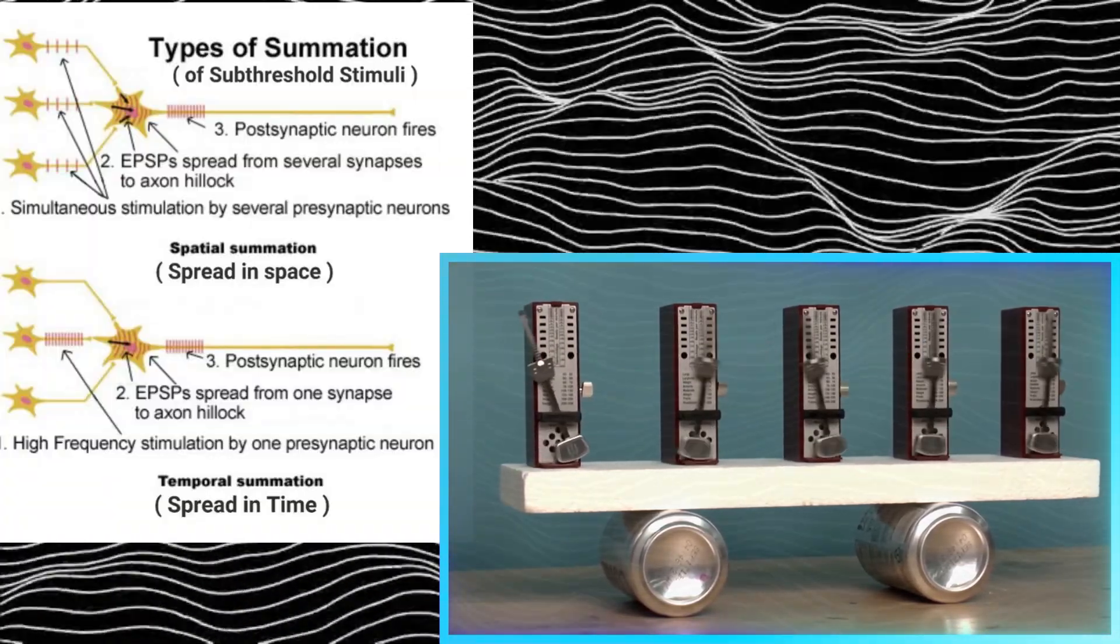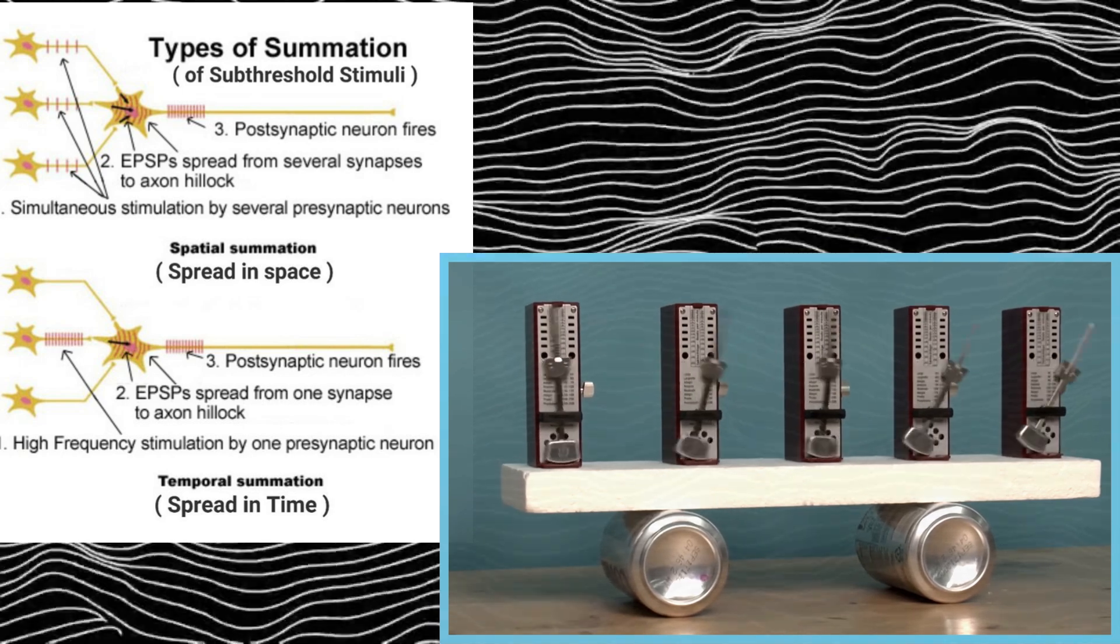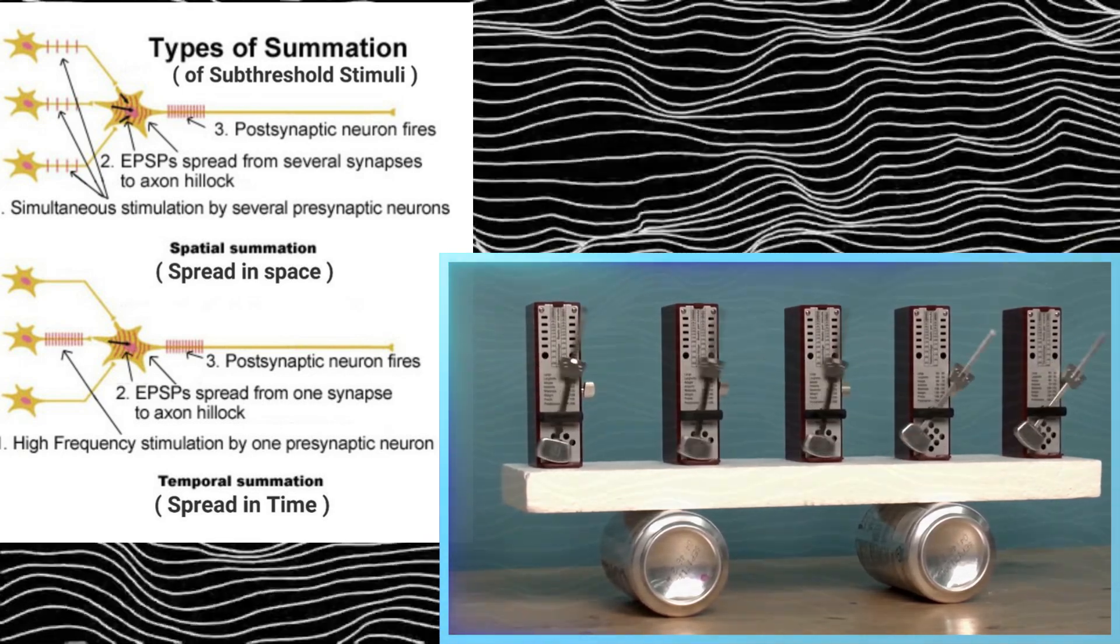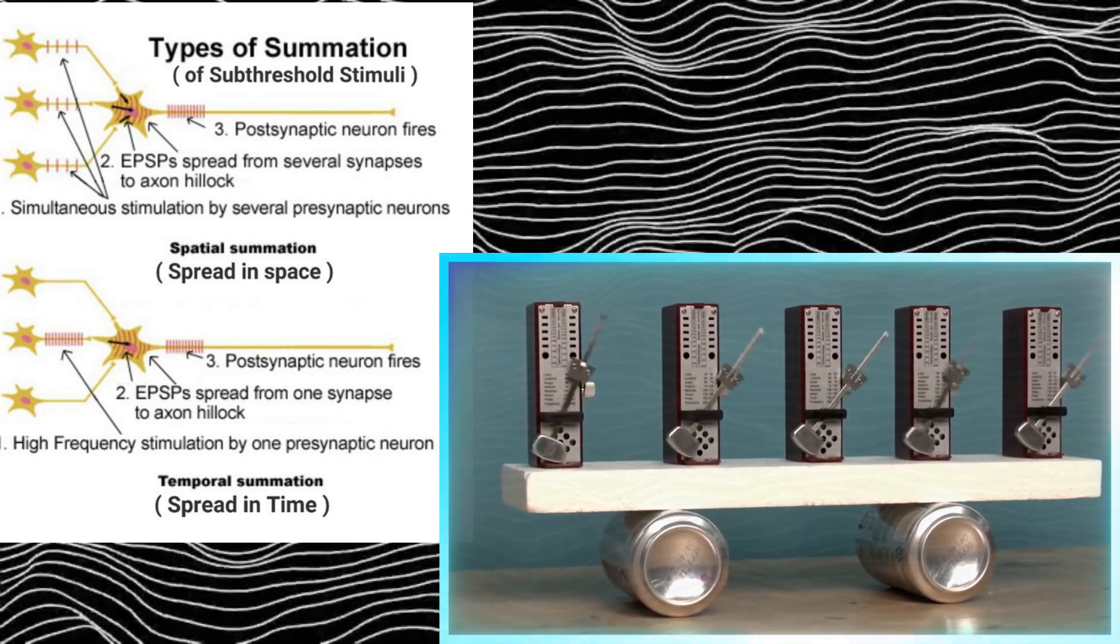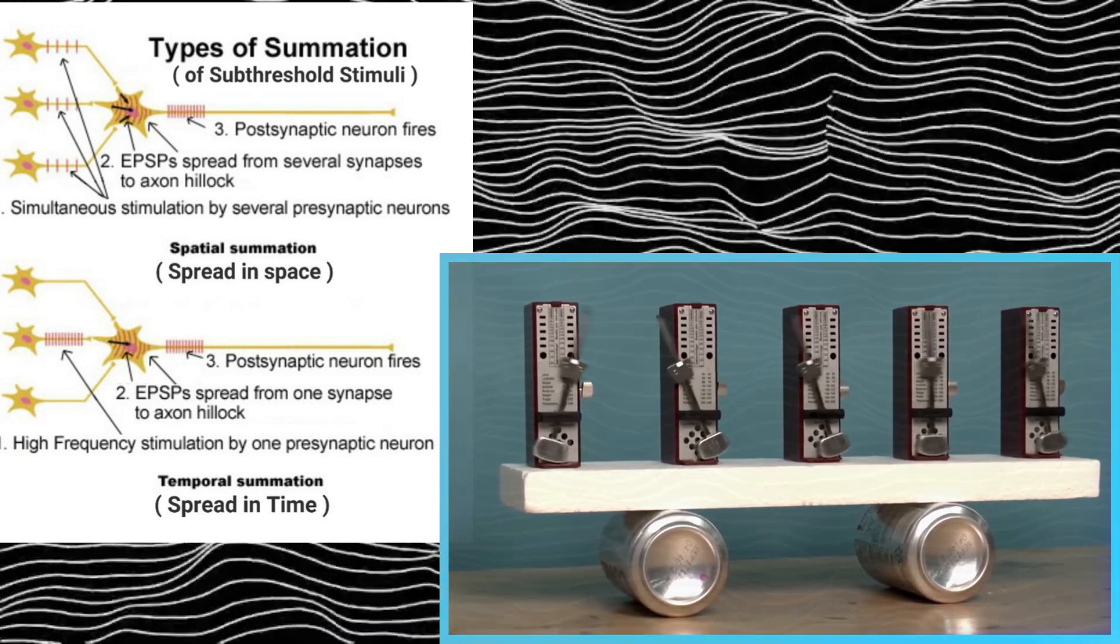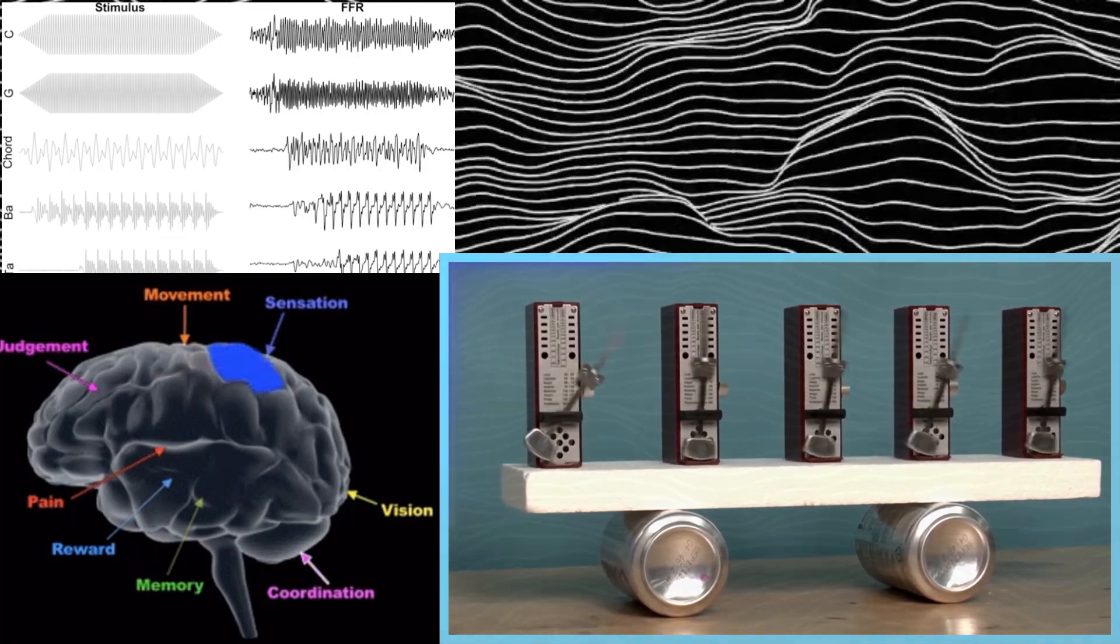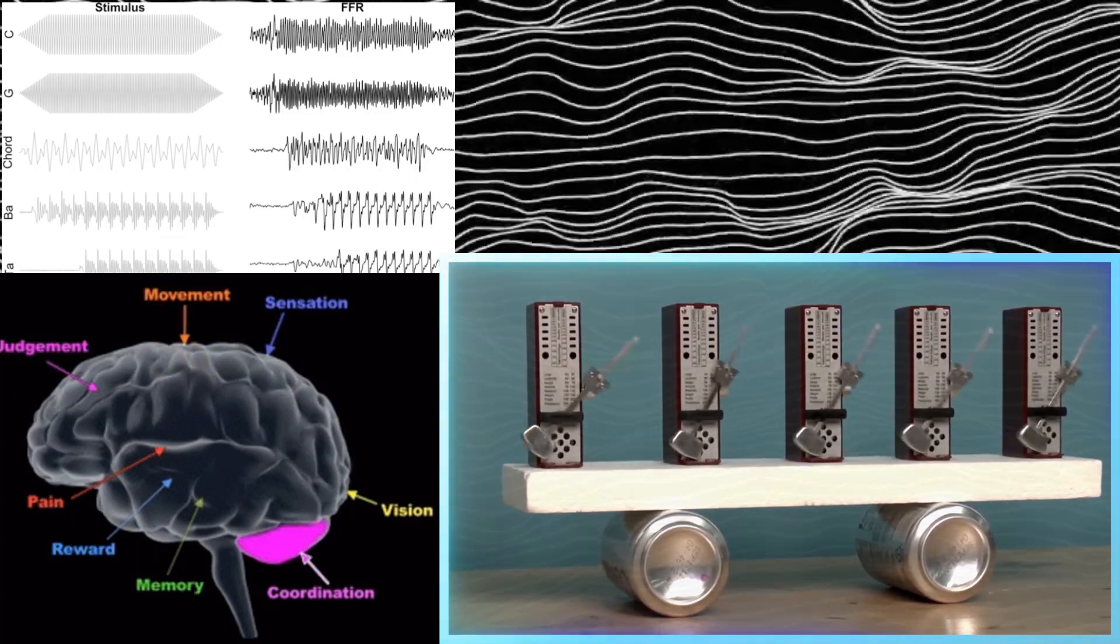The frequency follow response is a neurophysiological measure that reflects the brain's tracking of temporal structures of stimuli, known as the tempo, rhythm, or frequency. These patterns can influence brainwave states and induce specific states depending on the purpose and application.